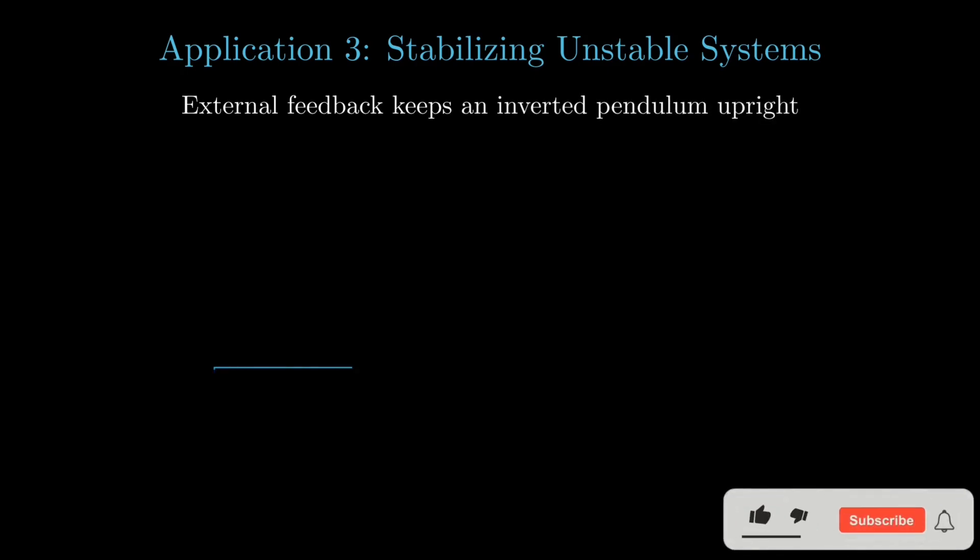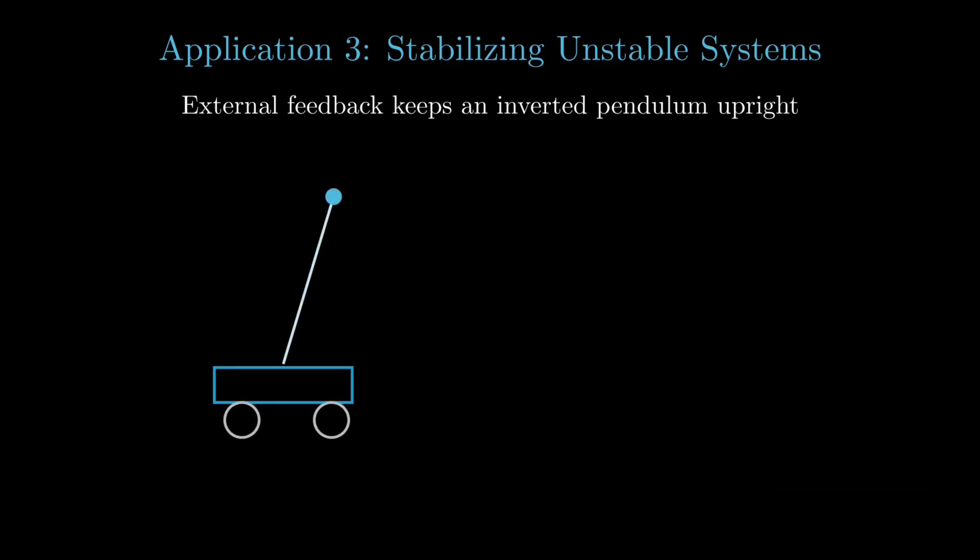Another insightful application is stabilizing unstable systems using feedback, such as the inverted pendulum, a classic problem in physics and control theory. Normally, an inverted pendulum is unstable and falls easily. However, by considering small deviations theta from the vertical equilibrium, we simplify the nonlinear equations governing its motion. Specifically, we use the small angle approximations sin theta equals theta and cos theta equals 1, thus simplifying the equation as you can see on the screen, which we'll understand later in detail.